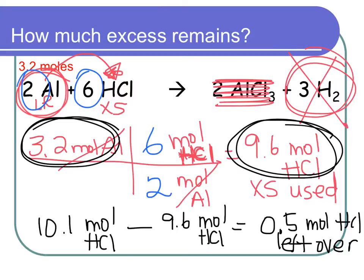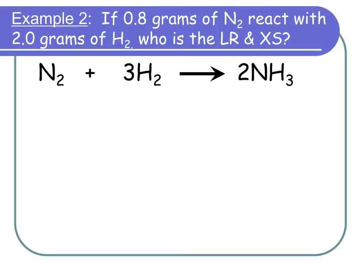Example 2: 0.8 grams of nitrogen reacting with 2.0 grams of hydrogen. Who's limiting, who's excess? Part B asks about NH₃ (ammonia), which is the only product. We know we're going to set up two train tracks. Since we're given grams, we'll need to convert to moles first.